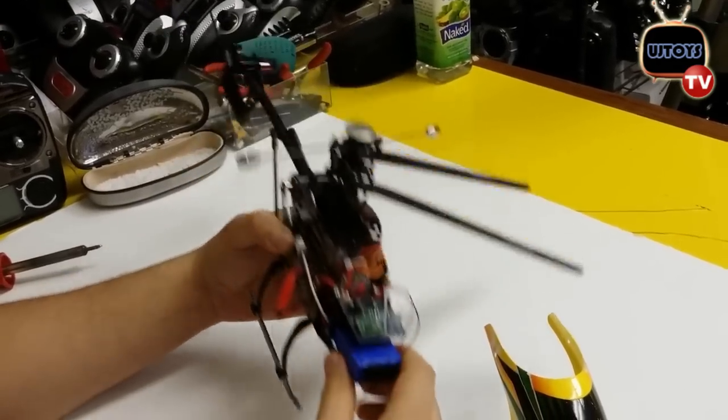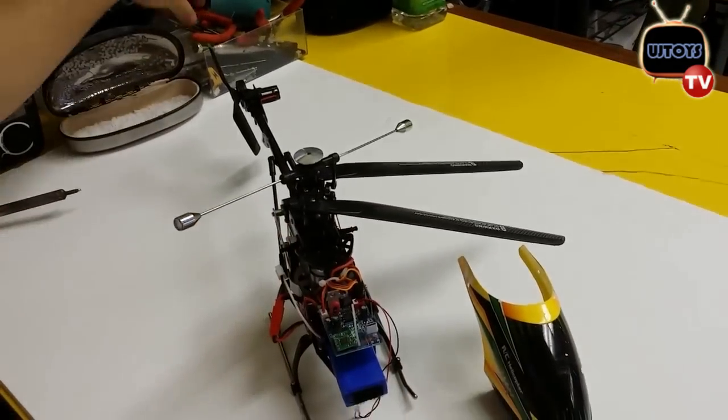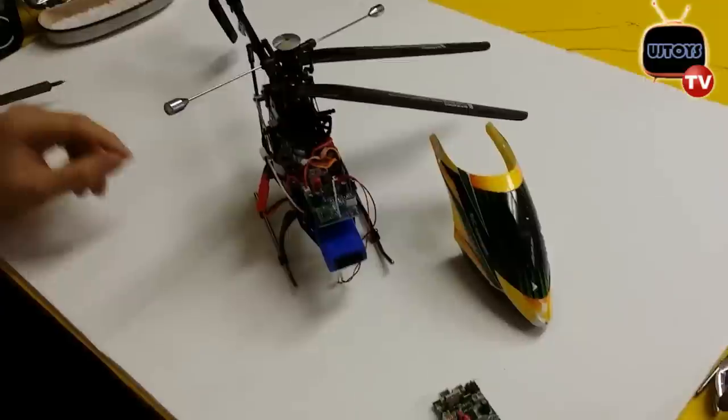So first what you're going to do is take off the head cover and you're going to release the cables from the tightener.